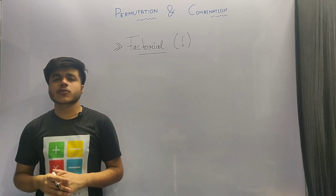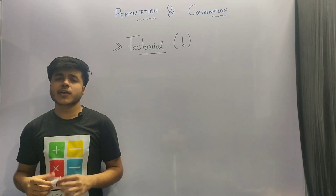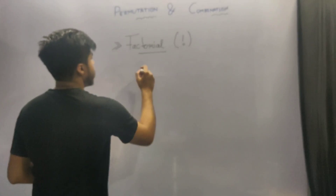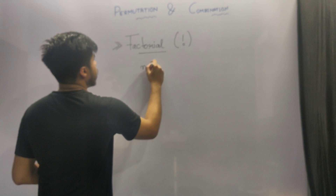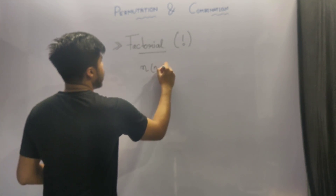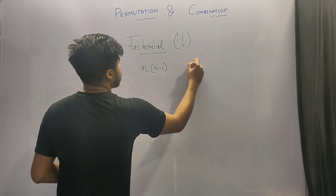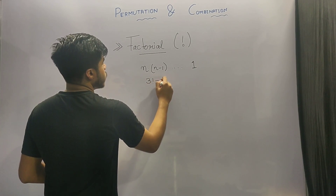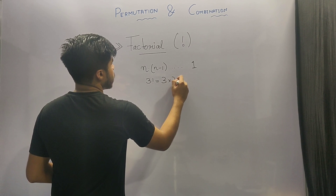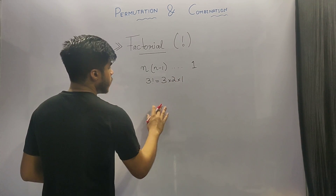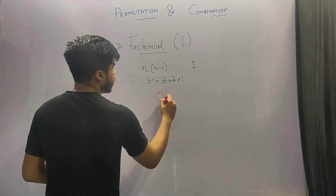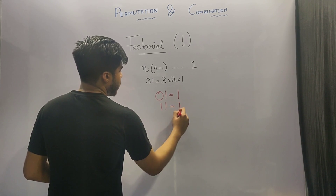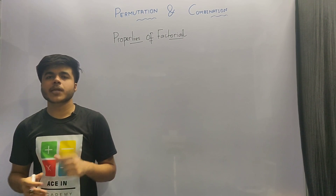Our first topic of discussion is factorial. Before diving into its properties, let's do a quick recap of what is a factorial. Factorial is basically the product of all the positive integers from the number down to the digit 1. So if you are given 3 factorial, it is equivalent to 3 into 2 into 1. We take the factorial of 0 as 1 and factorial of 1 also as 1. So let's discuss the properties of factorial.